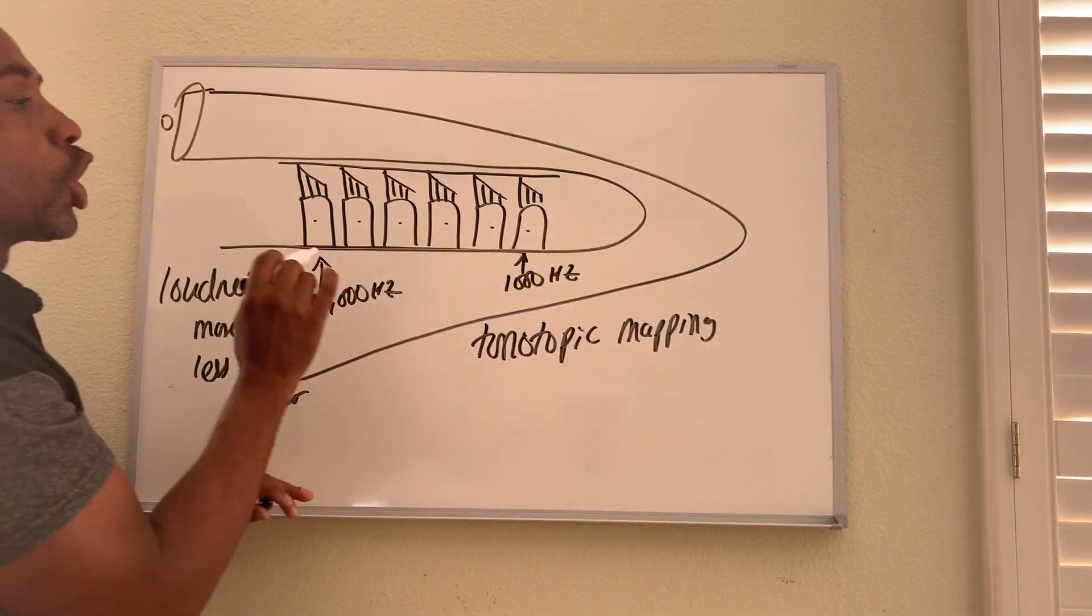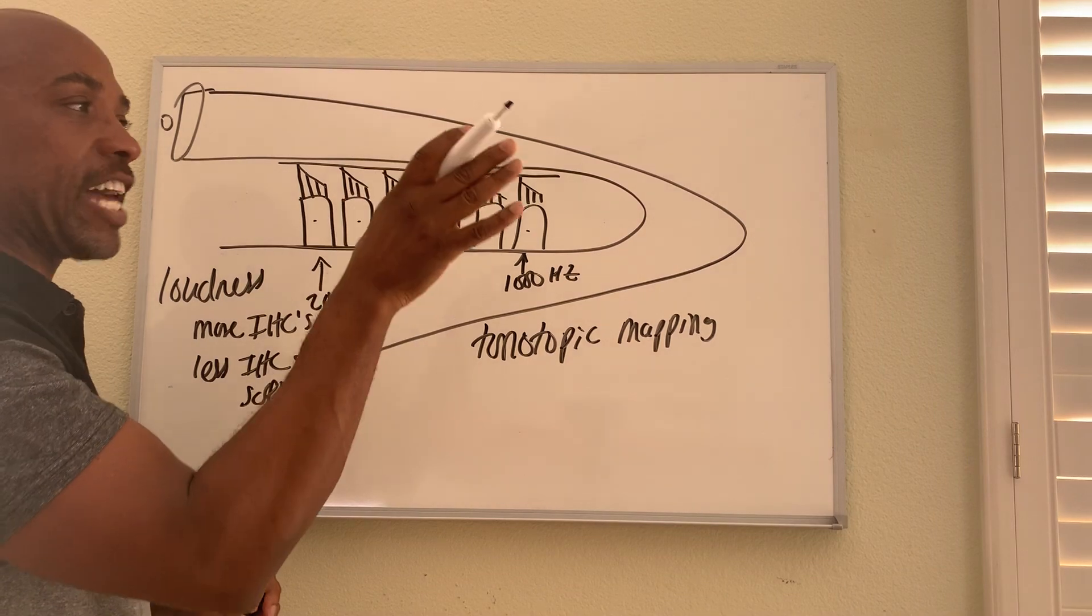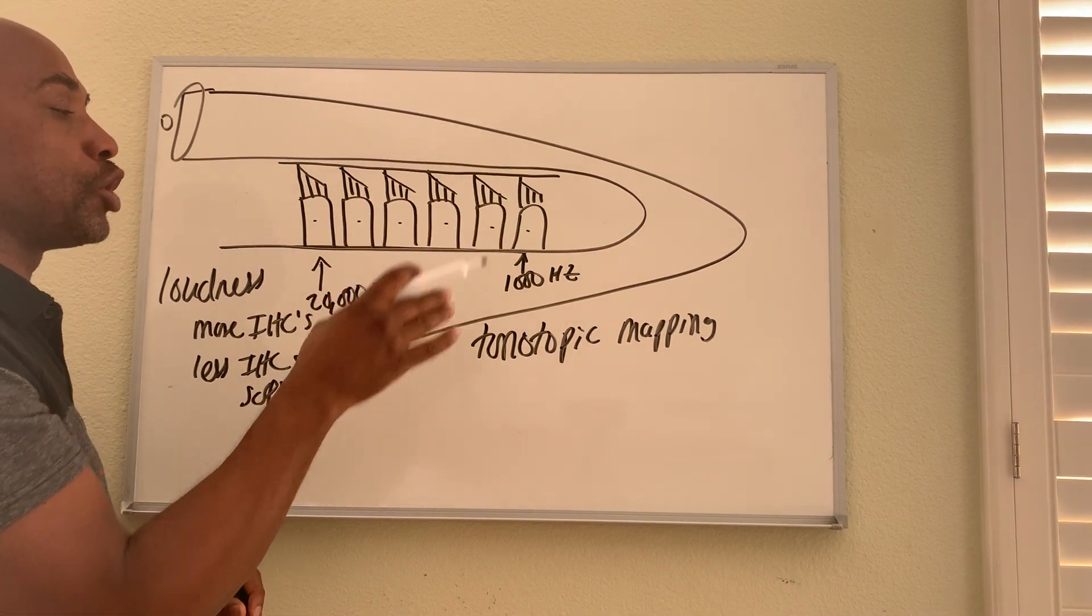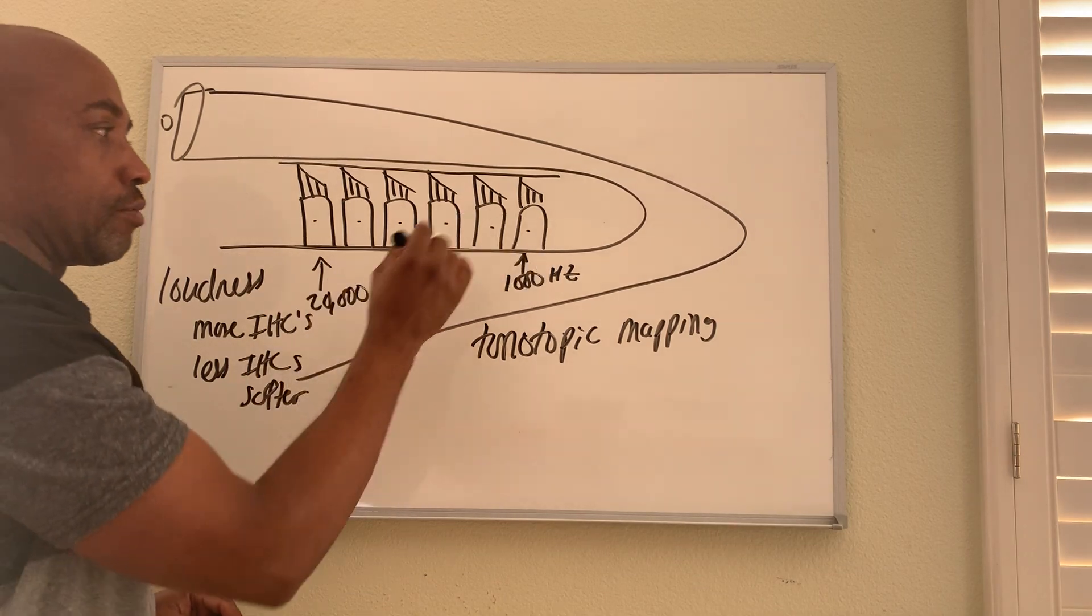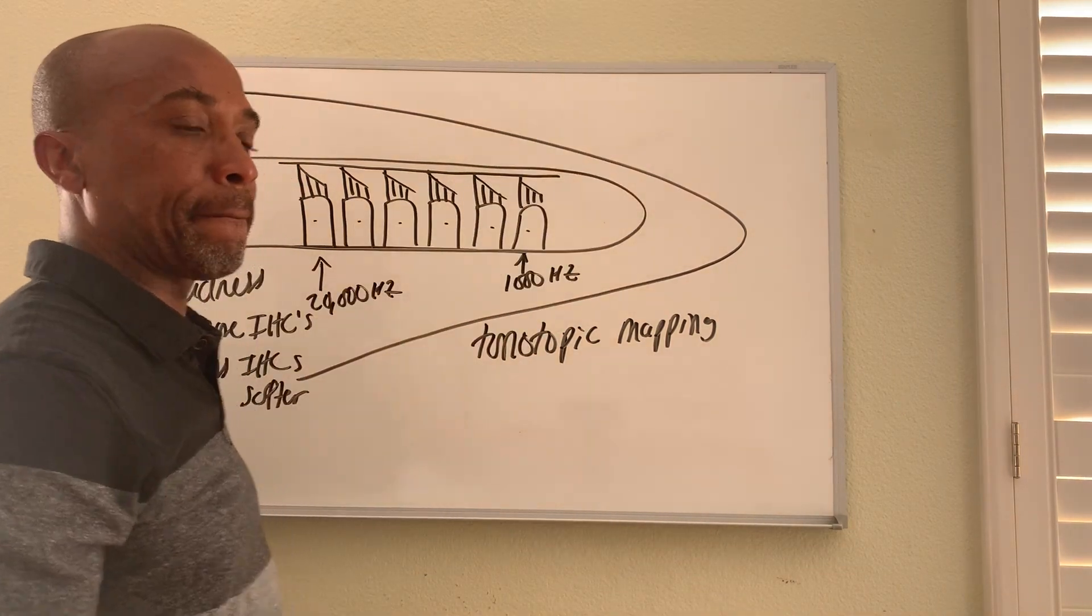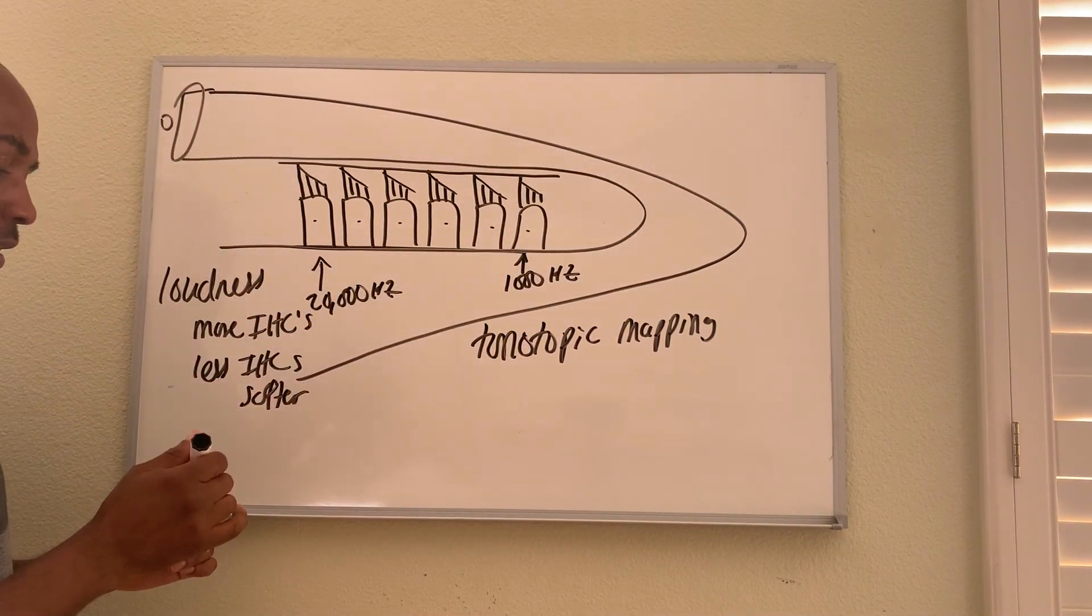And this kind of mapping goes all the way up through the pathways into the brain, up to your primary auditory cortex. It's mapped all along the way. Okay, so that's pitch and loudness.